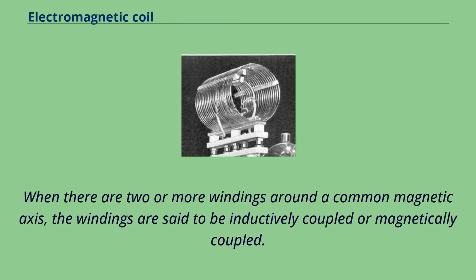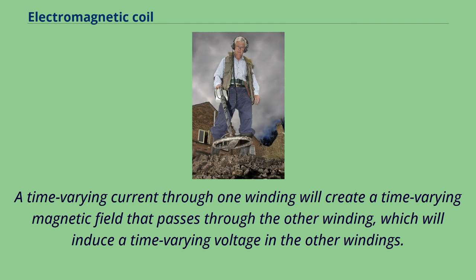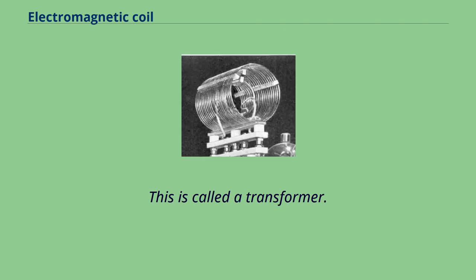When there are two or more windings around a common magnetic axis, the windings are said to be inductively coupled or magnetically coupled. A time-varying current through one winding will create a time-varying magnetic field that passes through the other winding, which will induce a time-varying voltage in the other windings. This is called a transformer.